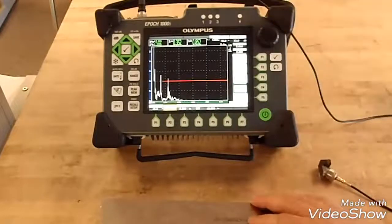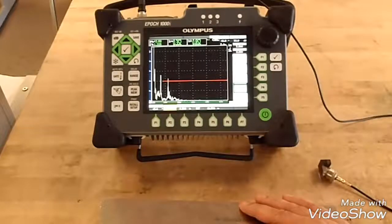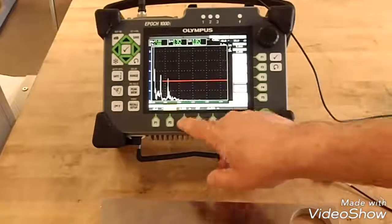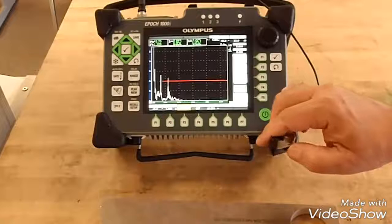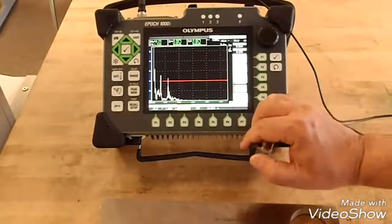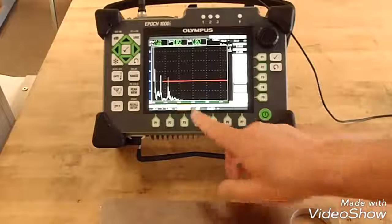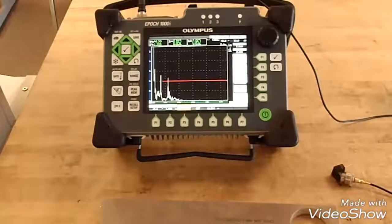The X value I'm gonna leave at zero. That X value is the measurement from the front of the wedge to the beam index point. Curved surface correction turned off.